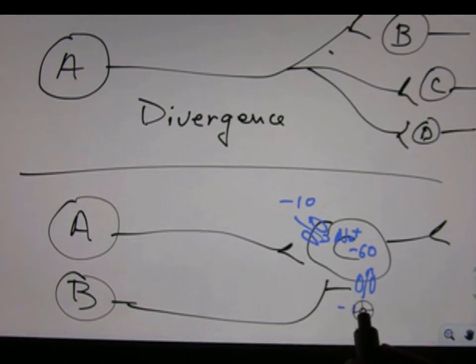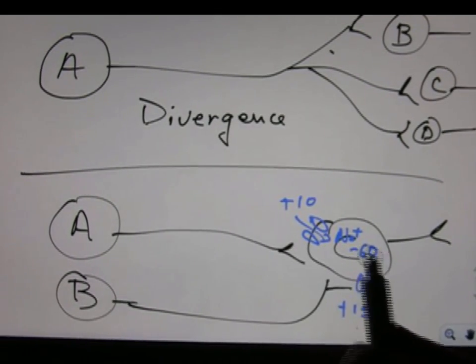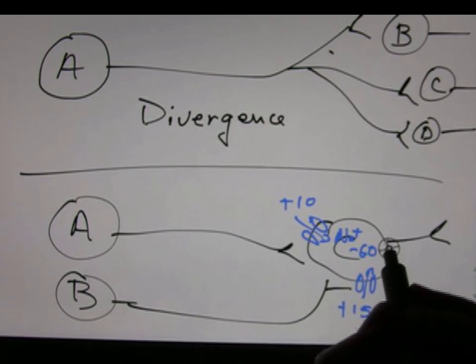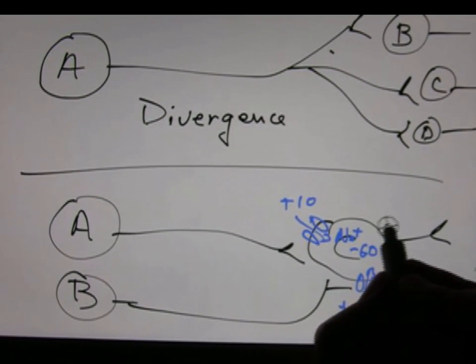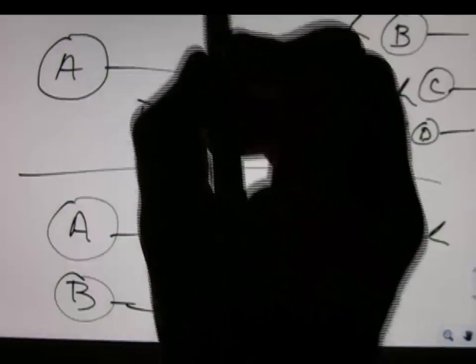This gets an additional minus 20, so both together perhaps might do minus 10, sorry, plus 10, plus 15. So this alone gets you to minus 60, this alone gets you to minus 55, but put them both together and they sum to minus 45, and you get a new action potential.